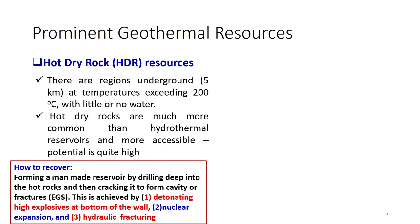To recover this energy, a manmade reservoir is formed by drilling deep into the hot rocks and then cracking them to form cavities or fractures — also known as EGS, Engineered or Enhanced Geothermal System. This is achieved by three techniques: detonation of explosives at the bottom of the well, mechanical and nuclear expansion, and hydraulic fracturing.